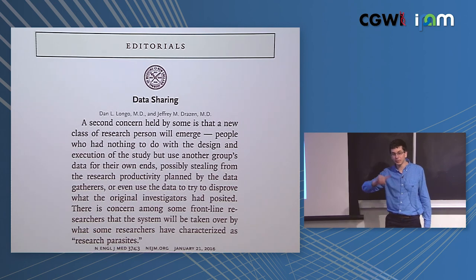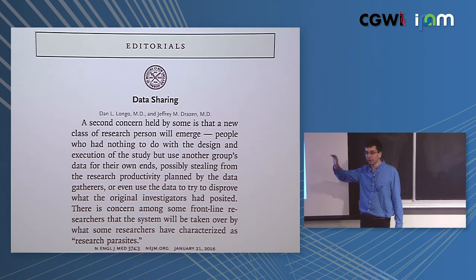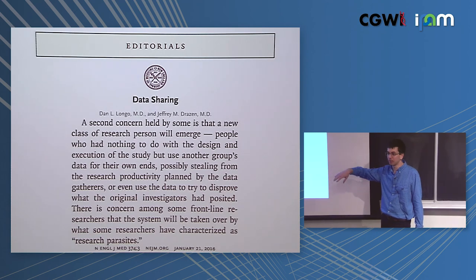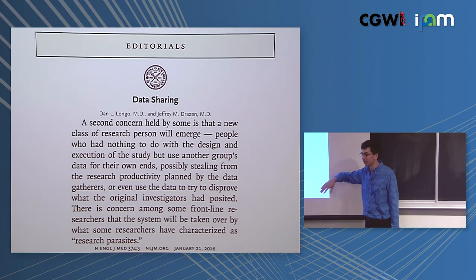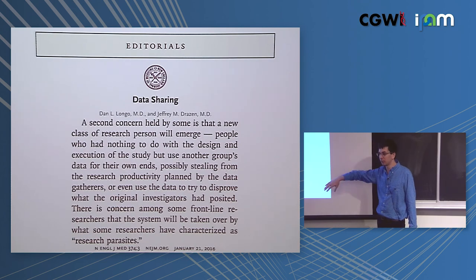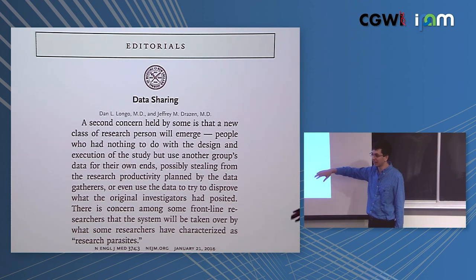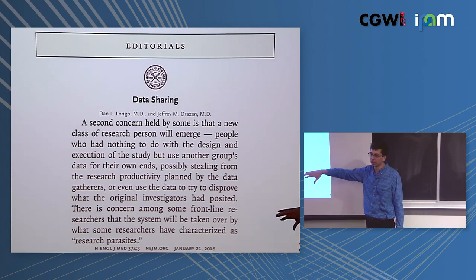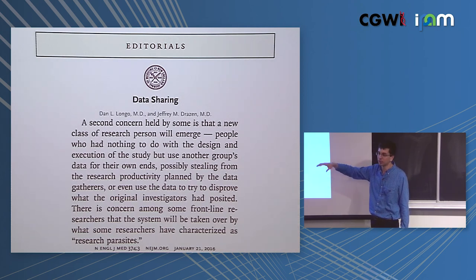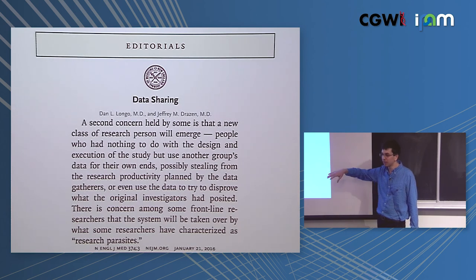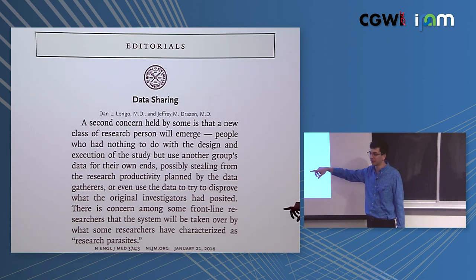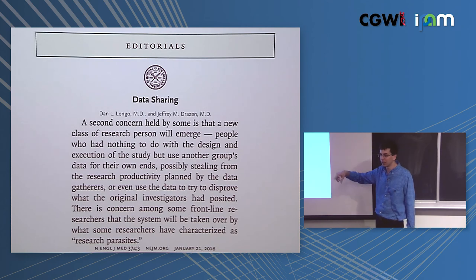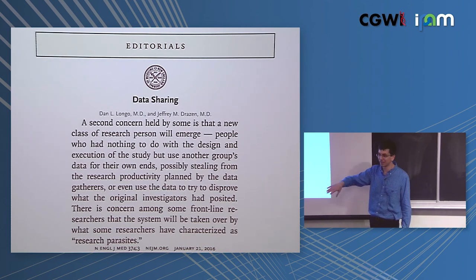We also started an award. Every year at PSB, we give out a research parasite award - there's a senior and a junior parasite. Researchparasite.com. Application deadline is usually end of September, notification mid-October. For the junior parasite, I do my best to raise enough money to bring you to the meeting. So if you feel like going to Hawaii in January and you're a trainee, researchparasite.com.